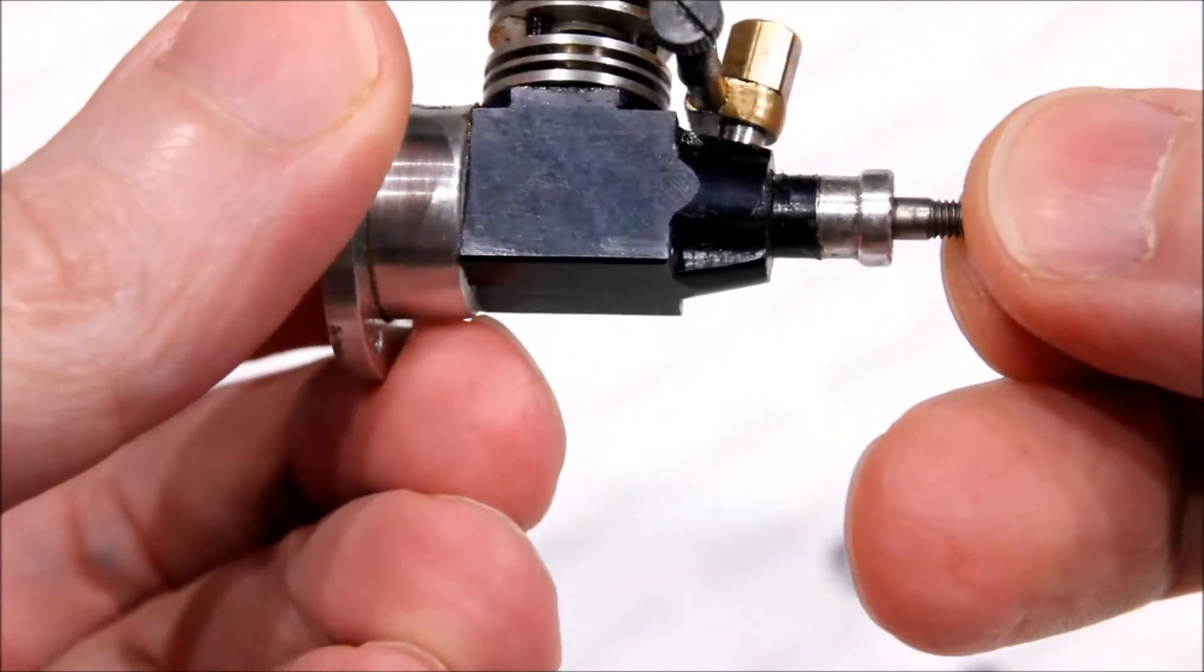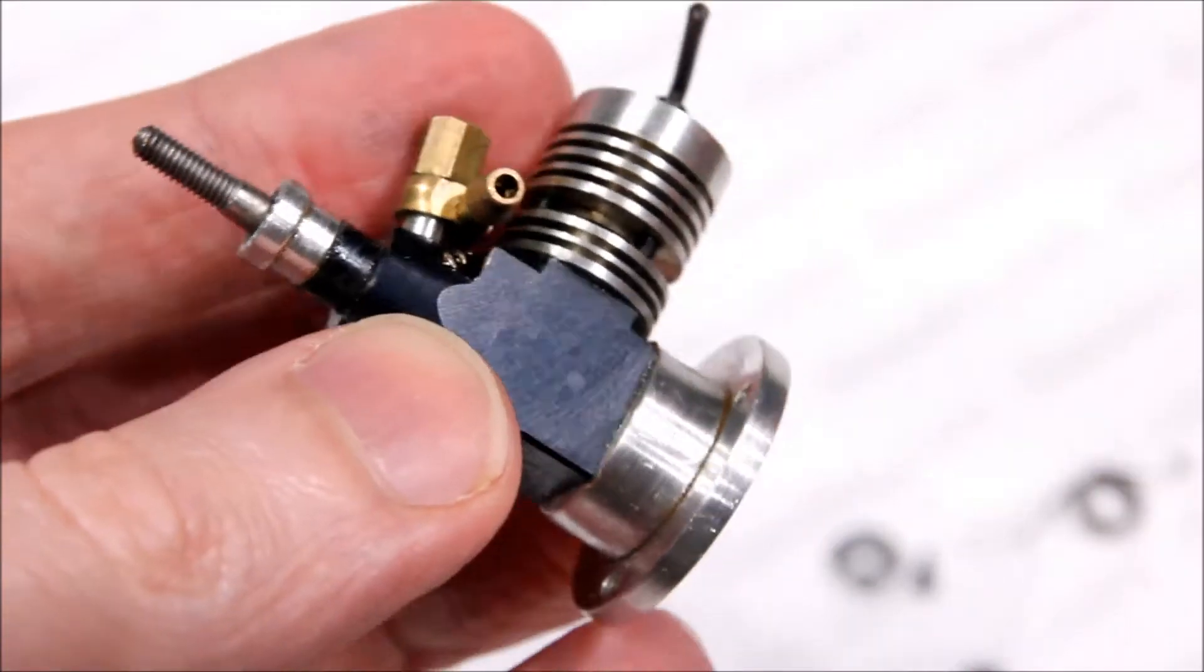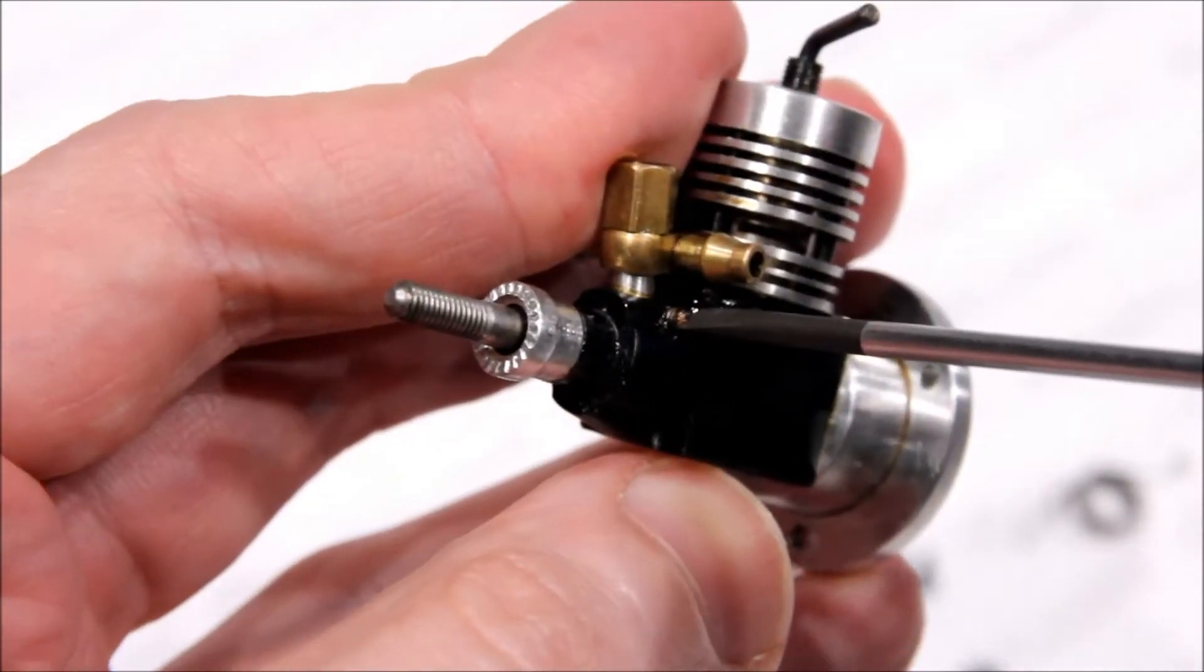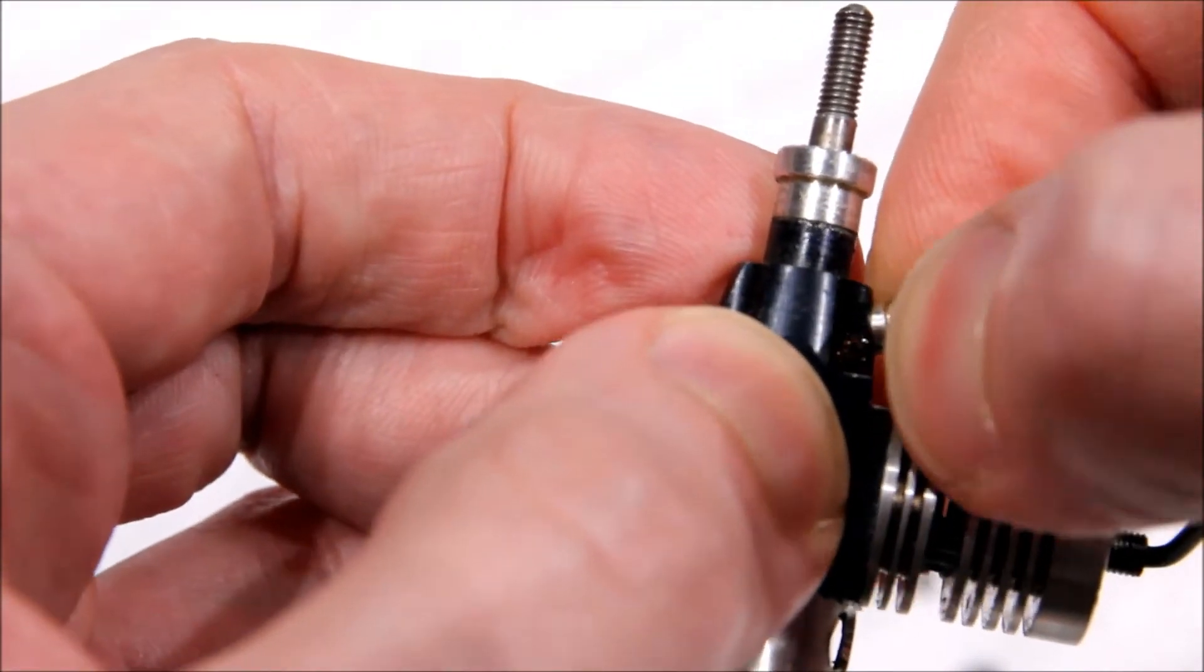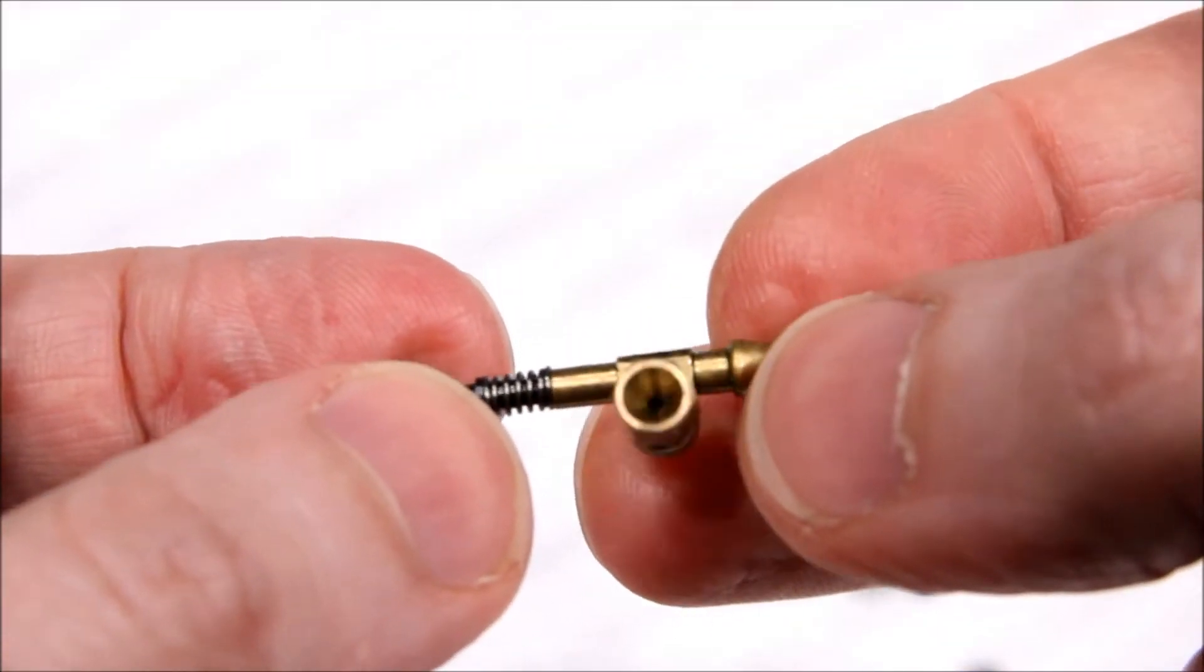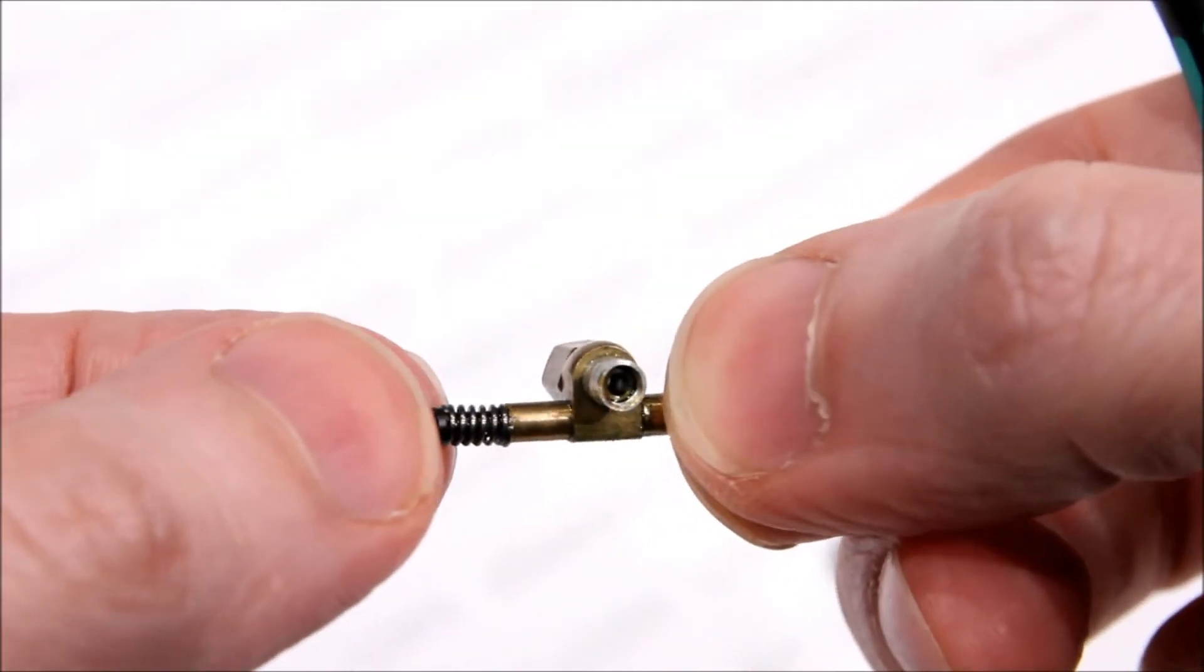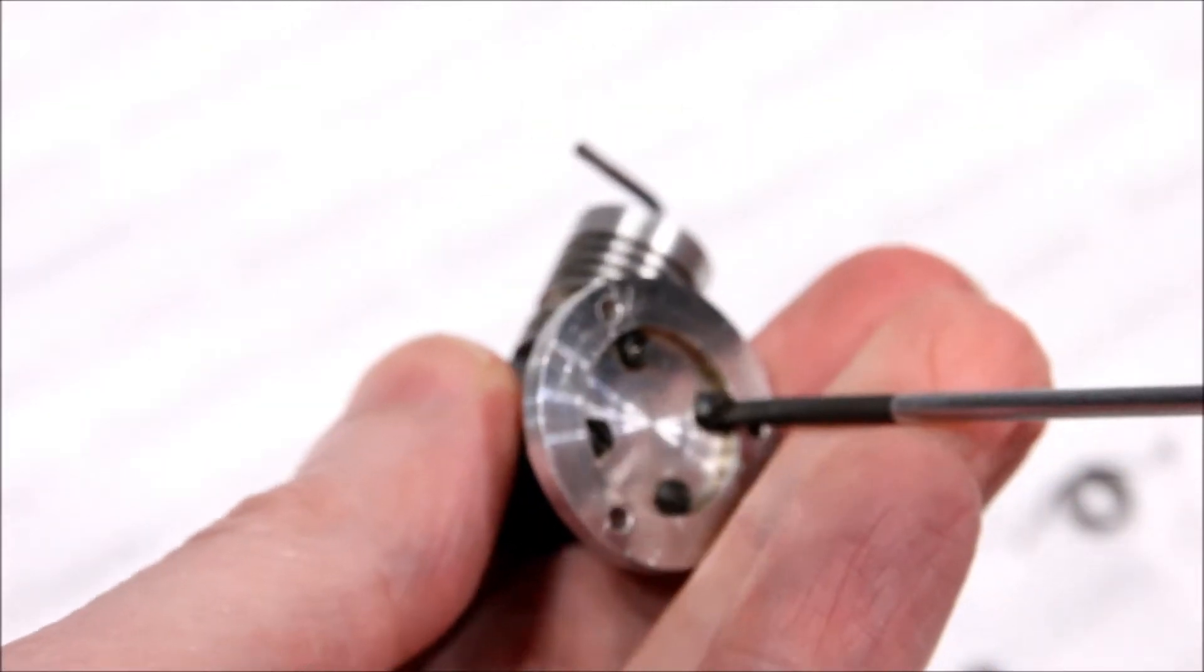That is the replacement needle valve assembly that I installed. It's secured with a set screw on the left side of the engine. This is actually a Super Tiger idle jet assembly from a very old engine, I think from the late 50s, early 60s.